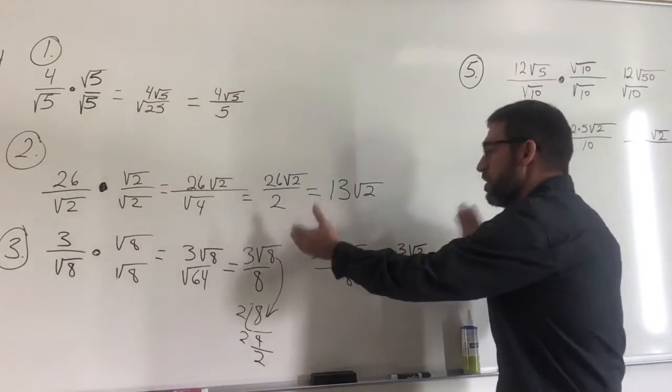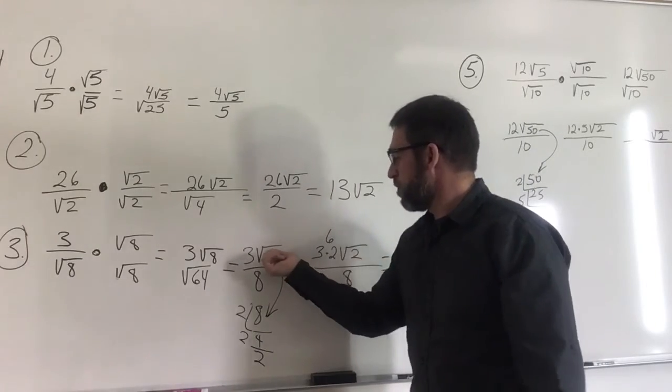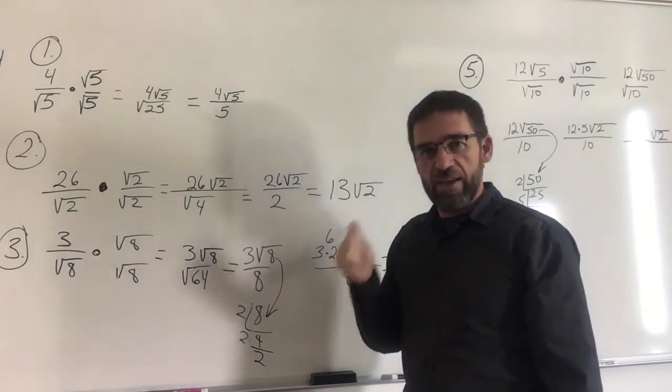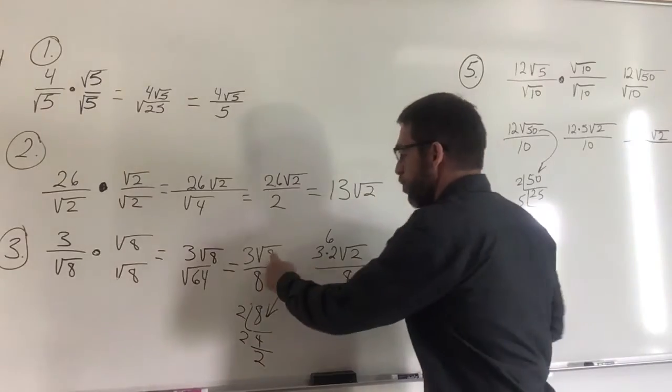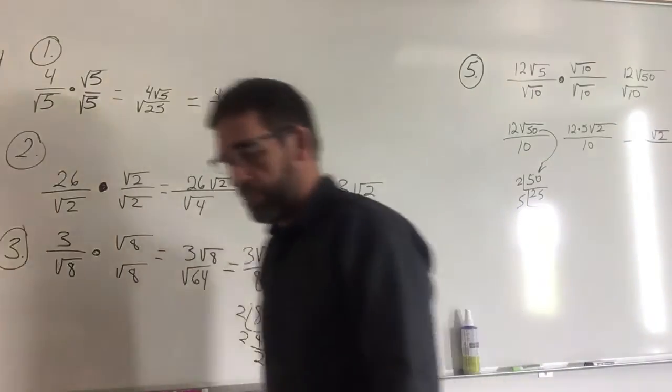Each time you just keep taking a lower step. Here you say 8 is not as low as it can go — you can take a square out of 8 to make it smaller.